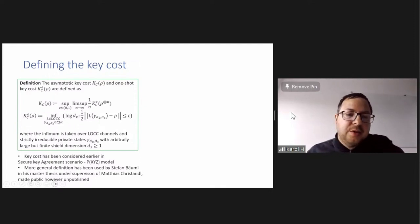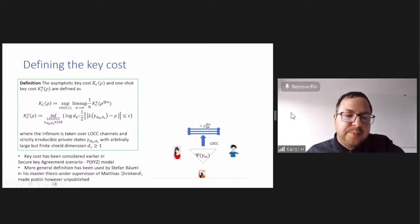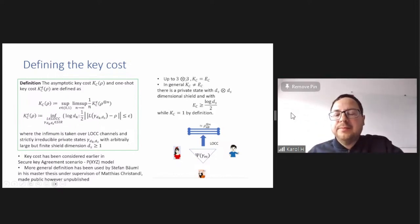And also, I just recently learned that, a more general definition, where instead of strictly reducible states, the irreducible private states were considered by Stefan Baum in his master thesis under supervision of Matthias Christendl, which were made public or unpublished, and at this moment, we can say that up to dimension three by three, the key cost is equal to entanglement cost, because there is no place in such small dimensions for the shielding system, so these two quantities coincide, given I can tell you already this, which follows from the results that we show, but in general, the key cost and entanglement cost are different, because there exists private state that has very large entanglement cost, log dimension of the shield, local dimension of the shielding system over two, but they are private, so they have key cost one by definition.